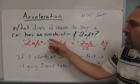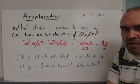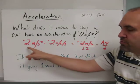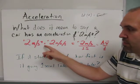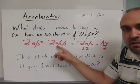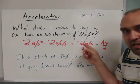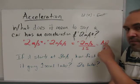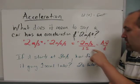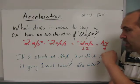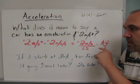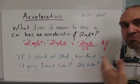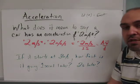What does it mean to say a car has an acceleration of 2 meters per second squared? Remember that 2 meters per second squared is the same thing as 2 meters per second per second, or 2 meters per second over 1 second. Acceleration is a change in velocity, positive or negative, divided by the time it takes to make that change. So 2 meters per second per second means that every second that goes by, that car speeds up by an amount equal to 2 meters per second.